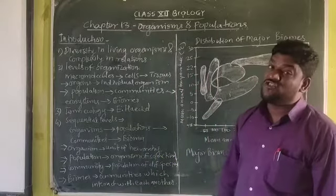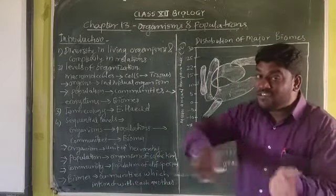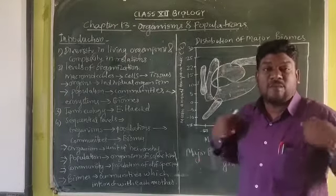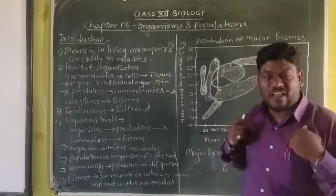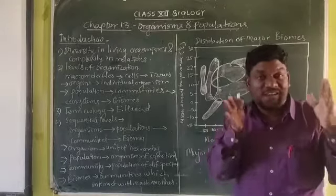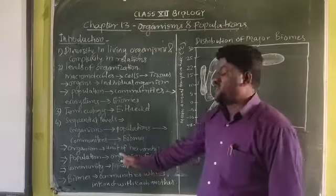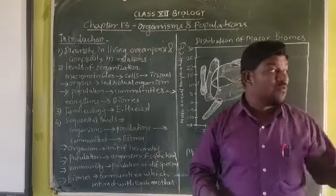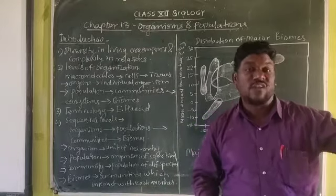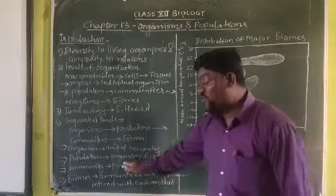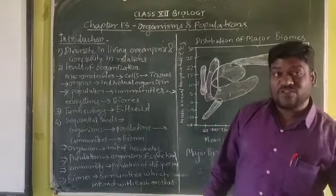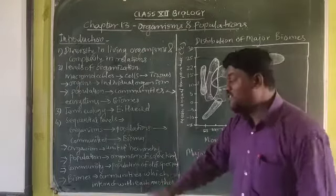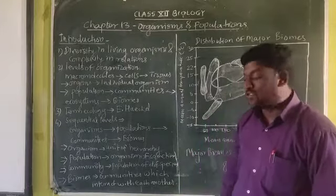Now, community is the population of different species. Suppose a school — I am a singular person, that is the organism. Different types of teachers and students attending the school form the population. Now in our school there are some birds, some cows, some buffaloes. So different types of populations — birds ka population alag, human beings ka population alag — these different populations create a community.